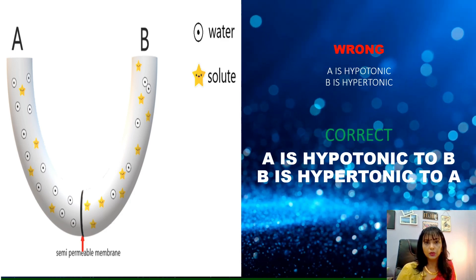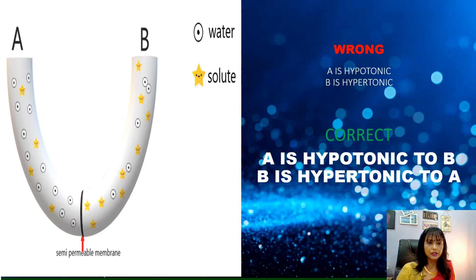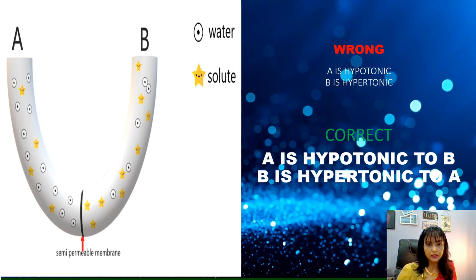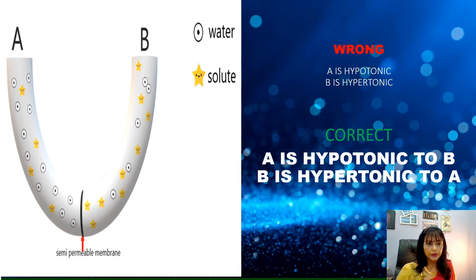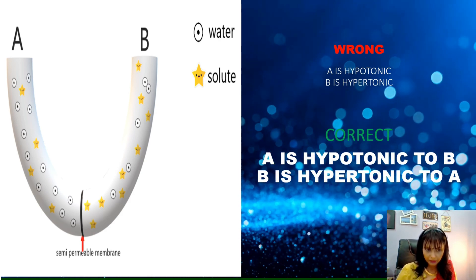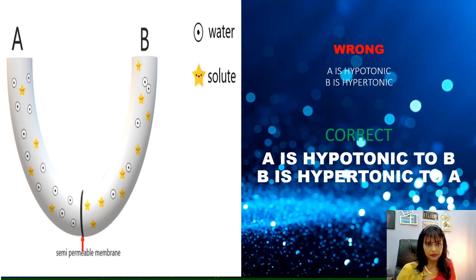In this case, please note that water, which is represented by the circle-like structure, you have more of that in A compared to B. And the star-like structure here, it is representing the solute. So, you have more of that in B compared to A. So, how are we going to write this?